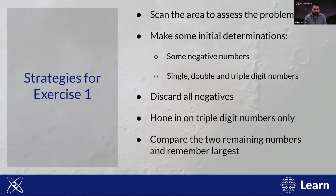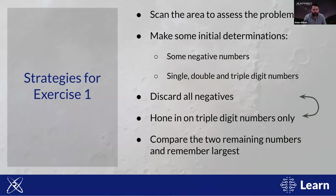What did you do to find it? You probably scanned the whole space to assess the problem and made initial determinations — noticing some negative numbers, some positive numbers, and single-, double-, and triple-digit numbers. Given these facts, you likely ignored everything with a minus sign immediately and focused only on the three-digit numbers. This effective reducing of the problem leaves you with a very simple calculation: which of the two three-digit numbers is largest? It was 134.